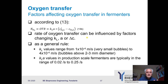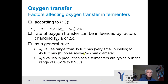Let's look at what range these values take in a real-world bioreactor. As a general rule, KL values range from 10⁻⁴ m/s for very small bubbles up to 4×10⁻⁴ m/s for bubbles larger than 2–3 mm in diameter. KLA values in production scale fermenters are typically in the range of 0.02 per second to 0.25 per second.